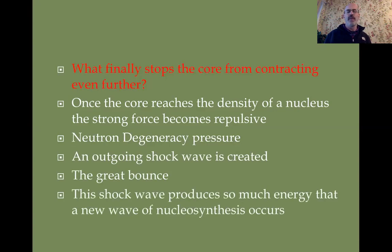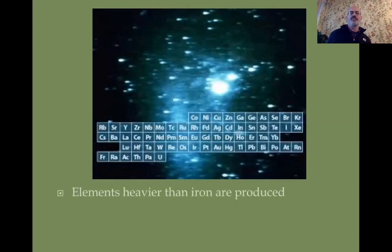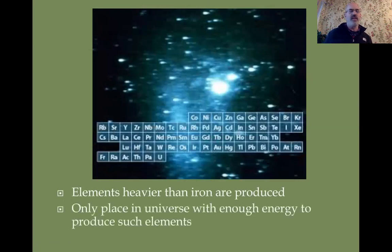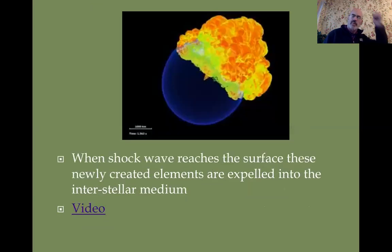This shock wave can fuse elements heavier than iron — all the heavy elements on the periodic table beyond iron are produced only here. All the gold, platinum, and mercury we find on Earth was originally produced in a Type 2 supernova explosion somewhere in the universe. That's also why these elements are so rare. These newly created elements seed clouds, which form new stars like our Sun, but there's not much of it, so heavy elements remain scarce.